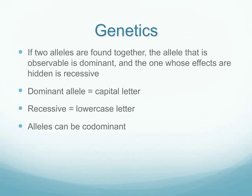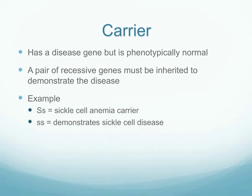If we have two alleles together, the one that is observed is the dominant one — indicated by a capital letter — whereas recessive is expressed by a lowercase letter. Alleles can also be codominant. A carrier is someone carrying a recessive gene. In sickle cell disease, you must have a pair of recessive genes to have the disease. If a person has a dominant S and a recessive s, they are a carrier; if they have two recessive genes, they demonstrate the disease.